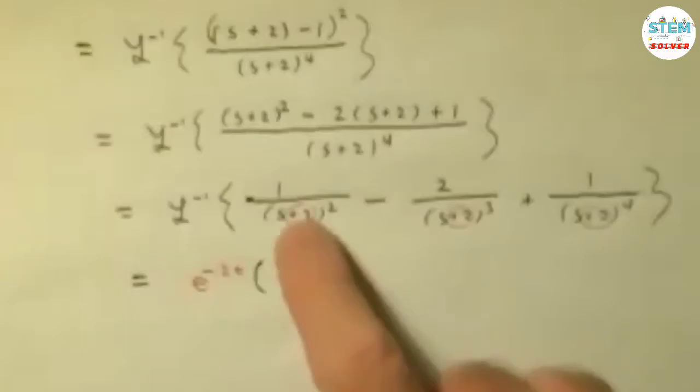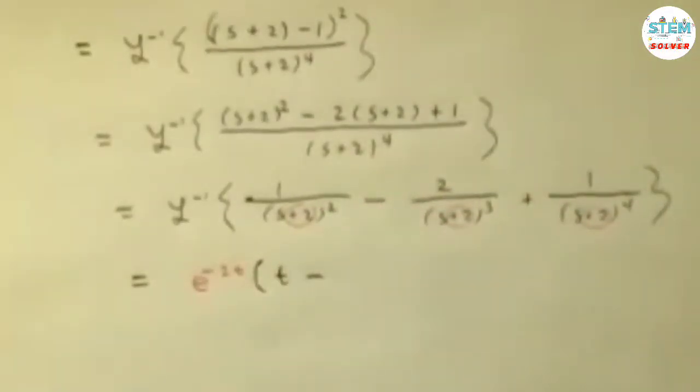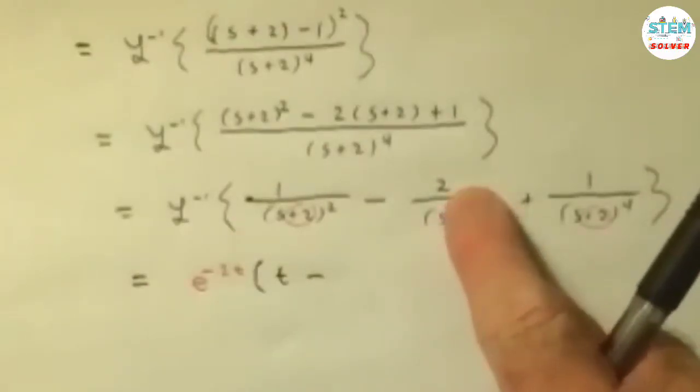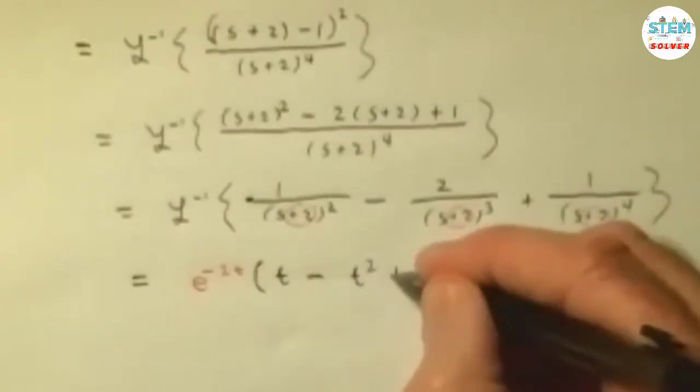And then I can ignore that plus 2, right? The 1 over s squared, you can get rid of that 2. 1 over s squared is t, right? Minus 2 over s cubed - s cubed would have to have 2 factorial, but it works out we have 2 there already, so we're actually good to go there. So that's going to be minus t squared.